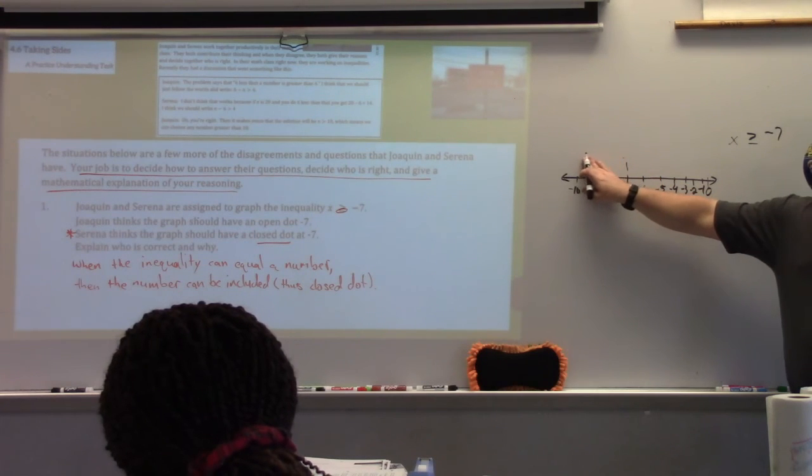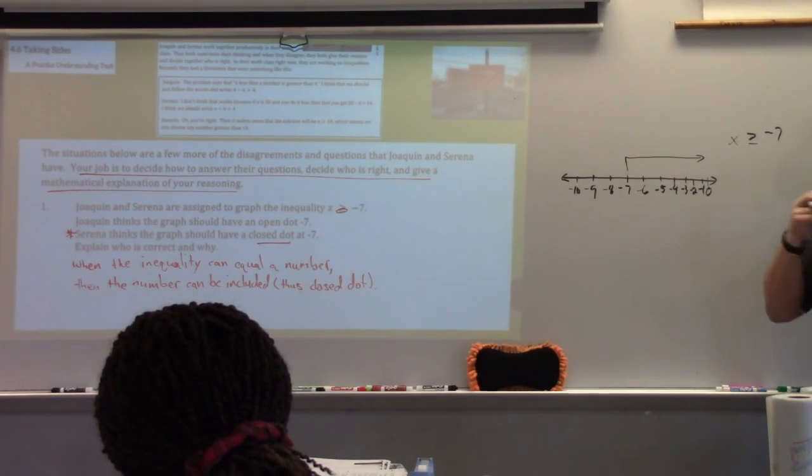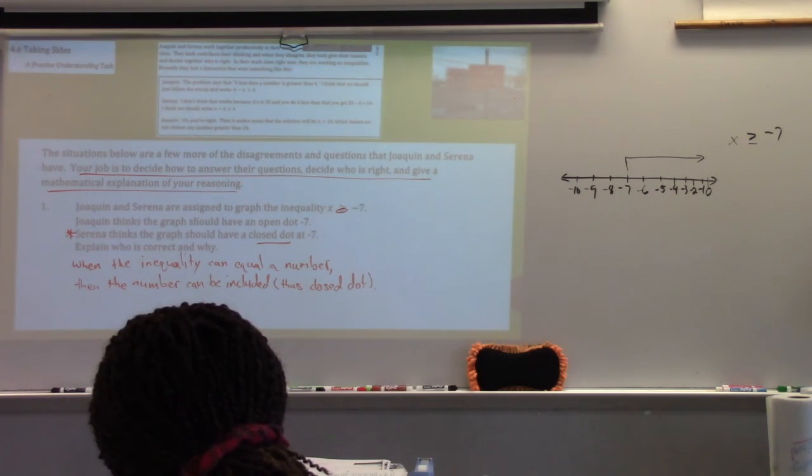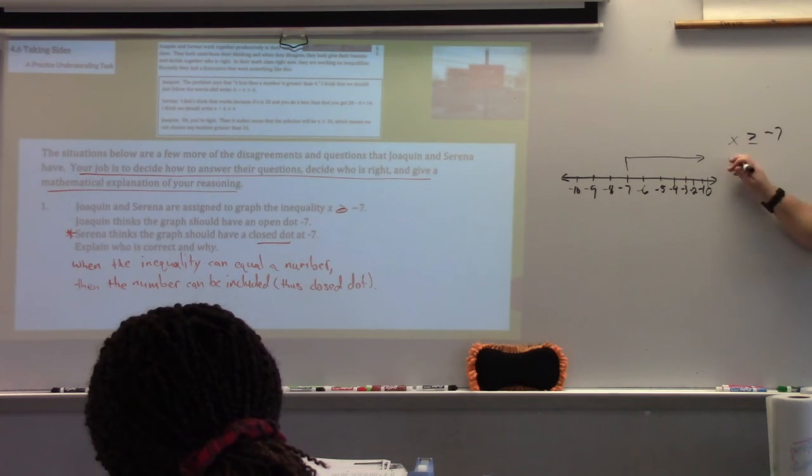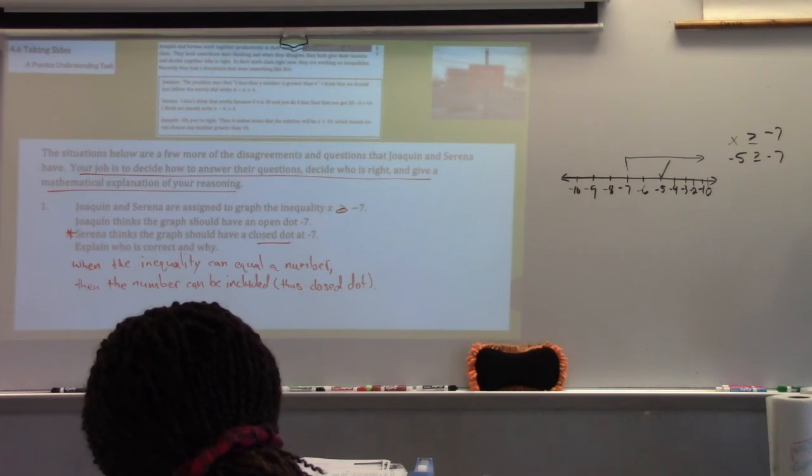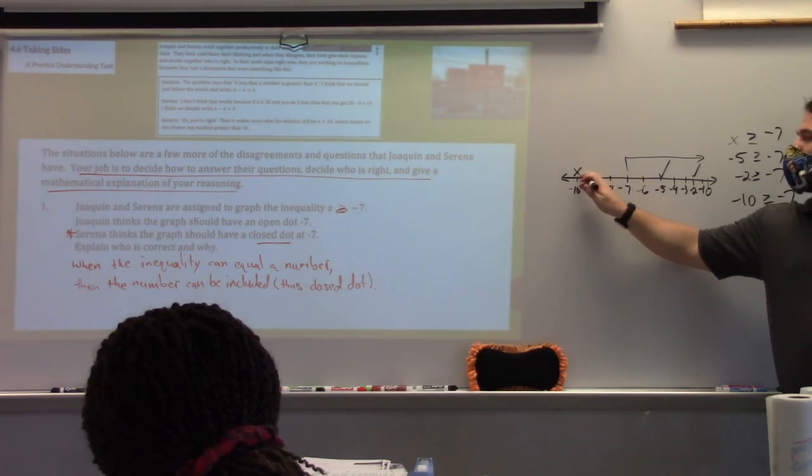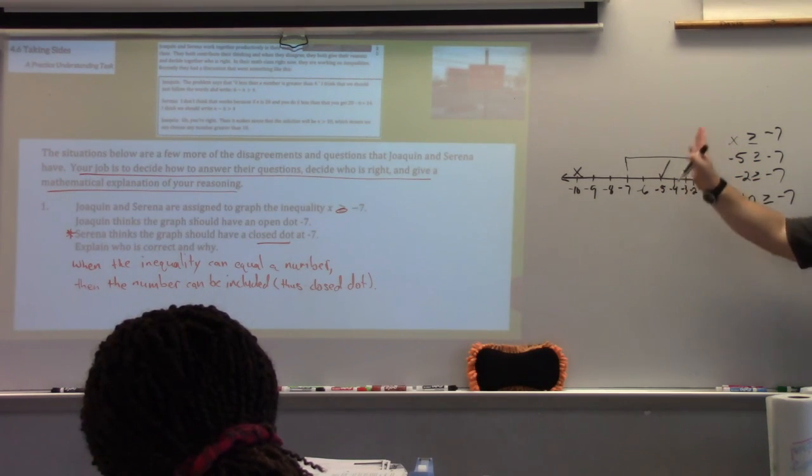So how do I know which direction to shade? Three out of four of you said I should shade to the right. Why would it be the numbers to the right? They're greater than negative 7. So what that means, and we want to check this, is negative 5 greater than or equal to negative 7? It's greater than. So that makes the inequality true. What is the thing that makes an inequality true? Starts with an S. Solution. Everything to do with equations and inequalities, when we solve, we're looking for solutions. When we graph, we're graphing the solutions. What about negative 2? Right here, is that greater than or equal to negative 7? It's greater than. Now if I check this negative 10, is negative 10 greater than or equal to negative 7? It's less than, so that would be false.